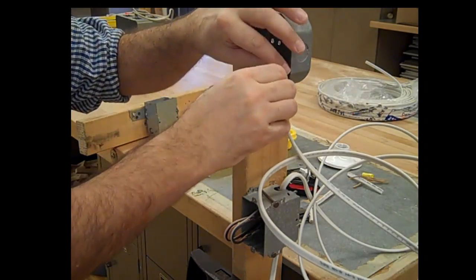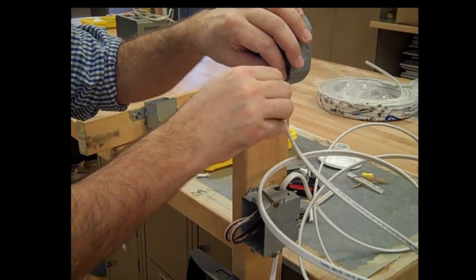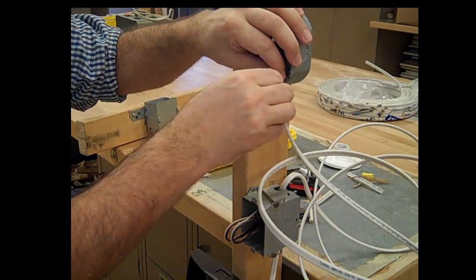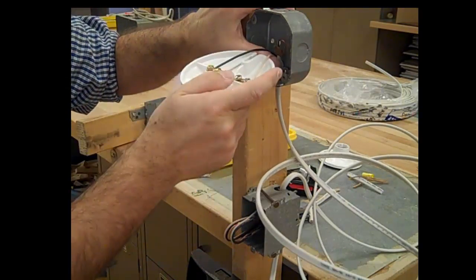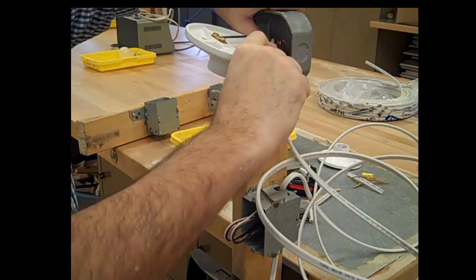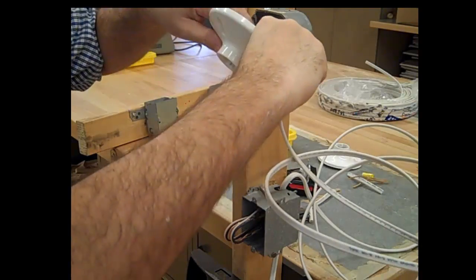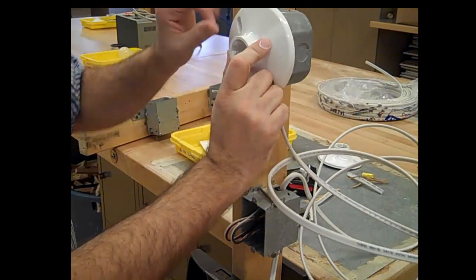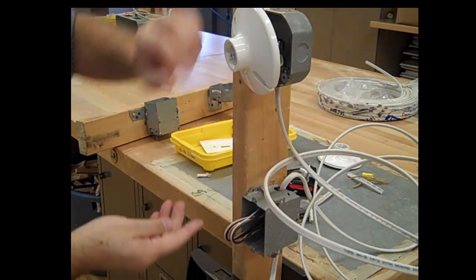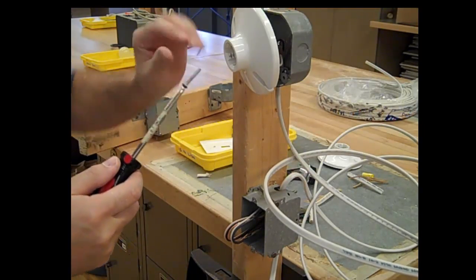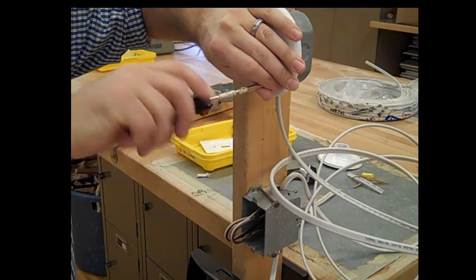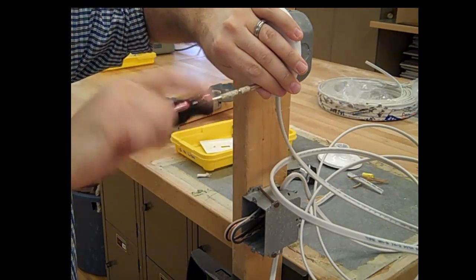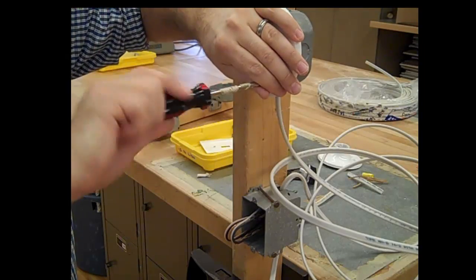So now we can fasten this cover to the box itself. If I fold these wires kind of like an accordion, it'll go together a lot easier for me. Line this up, grab a screw, and put that in.